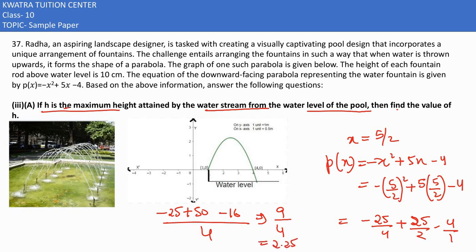This is 2.25 meters, and the fountain rod above water level is 10 cm, which is 0.1 meters. Converting to the same units, the maximum height would be 2.25 plus 0.1, which equals 2.35 meters.